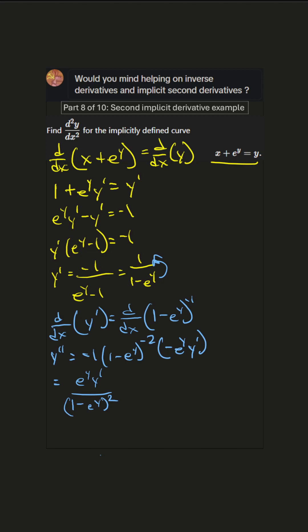Now we can use this expression for y prime and plug it in. So let's continue this. This equals e to the y, and then y prime is 1 over 1 minus e to the y, all over 1 minus e to the y squared.